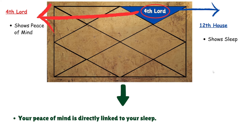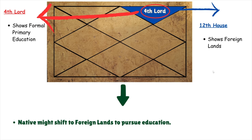The fourth lord shows peace of mind and the twelfth house is the house of sleep. Your peace of mind is directly linked to your sleep — the more good quality sleep you get, the more relaxed you feel and the closer you move toward attaining peace of mind. The fourth lord also shows primary education and the twelfth house is the house of foreign lands, so you might have to shift to foreign lands to pursue your primary education if the mahadasha and antardasha align.